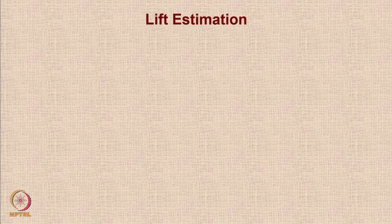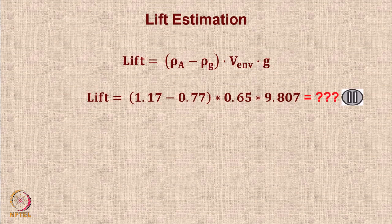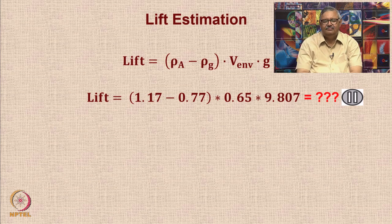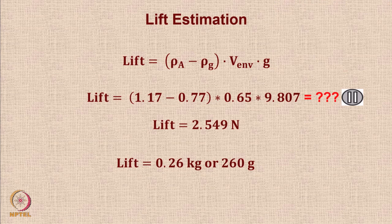Once we know ρ_ambient and ρ_hot, and the volume V, we can calculate the net buoyant mass. Please calculate this number. The lift will be multiplied by g, and it comes to approximately 0.26 kg or 260 grams.